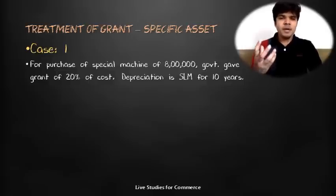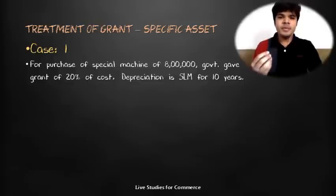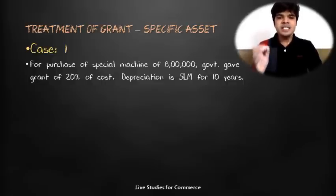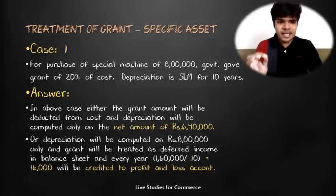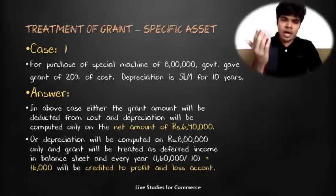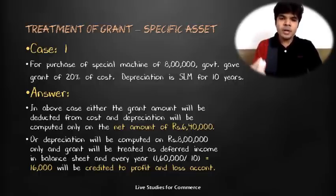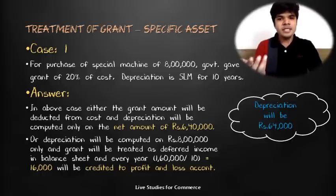Let's understand this with a practical case. For the purchase of a special machine costing ₹8 lakh, the government gave a grant of 20% of the cost, and depreciation is on SLM basis for 10 years. In the first method, you deduct 20% of ₹8 lakh, i.e., ₹1,60,000, from the asset value, show the asset at ₹6,40,000 in the balance sheet, and charge depreciation over 10 years, giving depreciation of ₹64,000 per year.